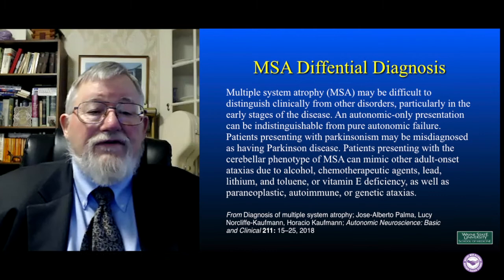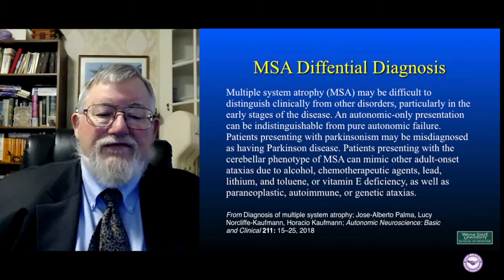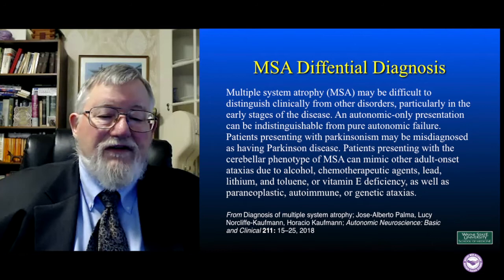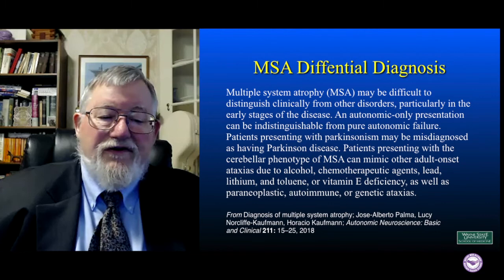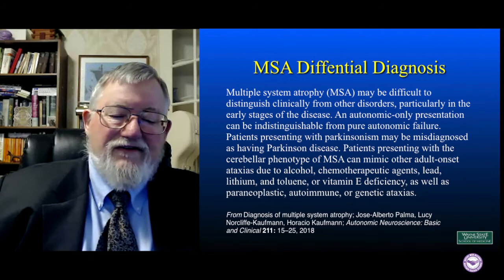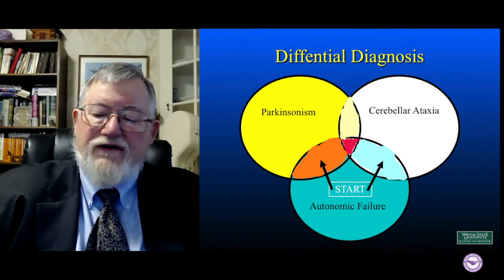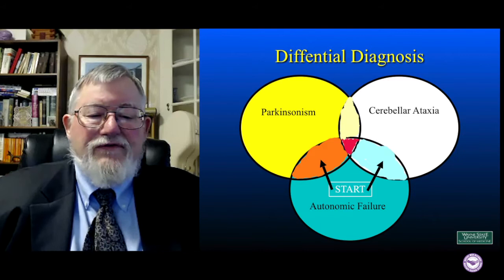A paper notes that multiple system atrophy may be difficult to distinguish clinically from other disorders, particularly in the early stages of disease. An autonomic-only presentation can be indistinguishable from pure autonomic failure. Patients presenting with Parkinsonism may be misdiagnosed as having Parkinson's disease. Patients presenting with the cerebellar type of MSA can mimic other adult-onset ataxias. In fact, the most common presentation is with autonomic failure, and then patients begin to move into the junctures as they develop some Parkinsonism or ataxia.